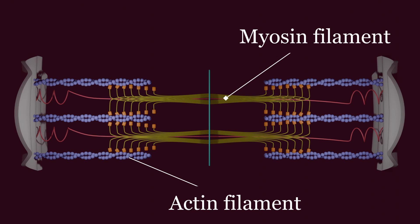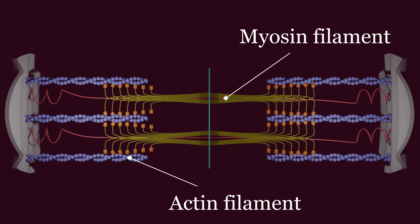Movements are the result of interactions between the actin and myosin filaments in the sarcomeres.